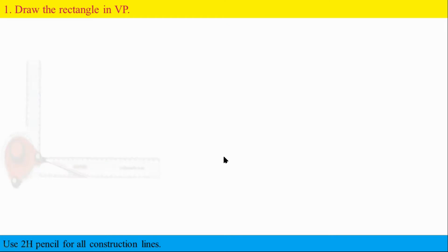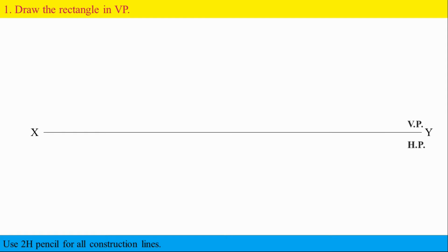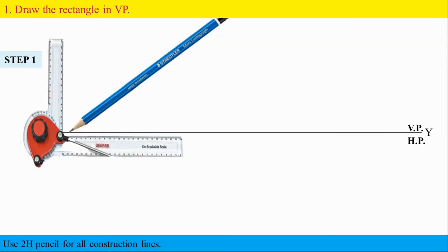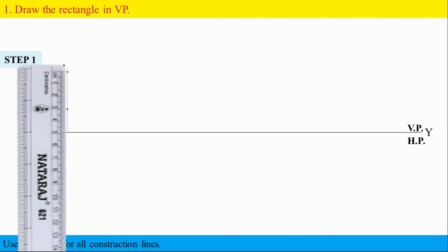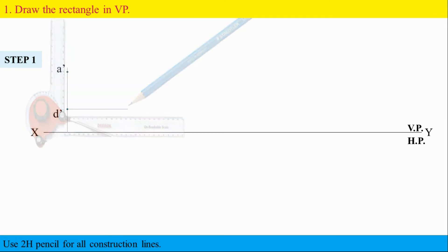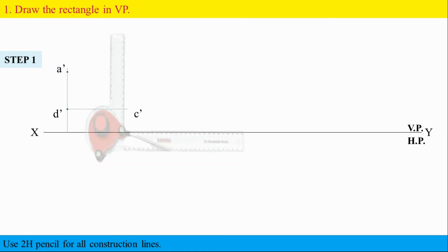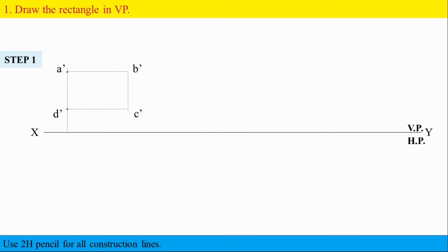Let's go to the VP and HP. In the VP, draw the XY line. Mark D dash, then from D dash mark the 30 distance point. From D dash, draw a horizontal 50 distance to C dash. From C dash, draw 30 vertical to get B dash, then A dash. Darken the rectangle.